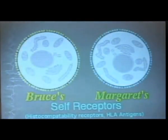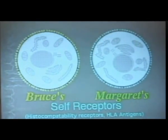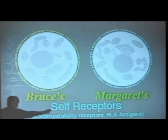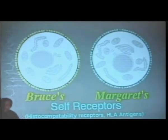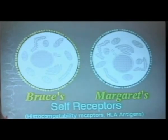Can you see where the colors are left? They're in the membrane. Biologists even call some of these 'self-receptors.' What are receptors? Receivers. What are self-receptors? Receivers of self.